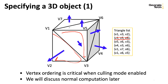Working through the example with the left-hand rule: pointing the thumb upward, fingers curl V1, V6, V5. For the next triangle, pointing fingers up gives V7, V6, V1 — listed as V1, V7, V6. Taking the left hand with thumb pointing right, we get V5, V6, V3. And finally, with the thumb pointing right, curling fingers around gives V4, V3, V6.